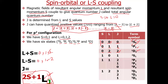This is an important point: if either S or L is 0, we get only one value of J because L+S and |L−S| will be the same. For S = 1, L = 0: L+S = 0+1 = 1 and |L−S| = |0−1| = 1, so J = 1, giving the term symbol 3S1.